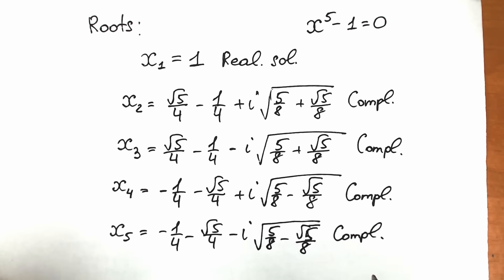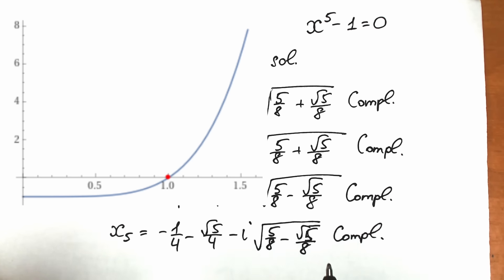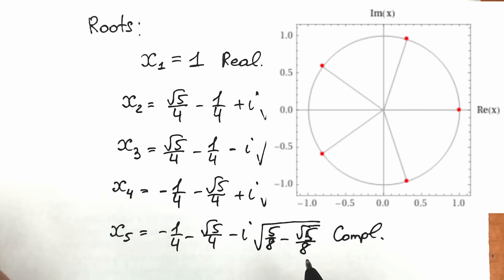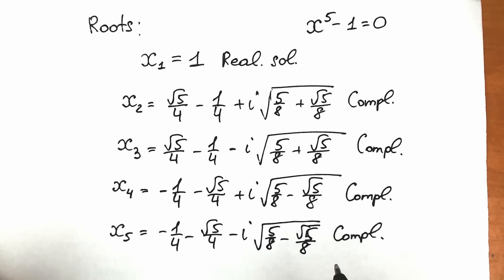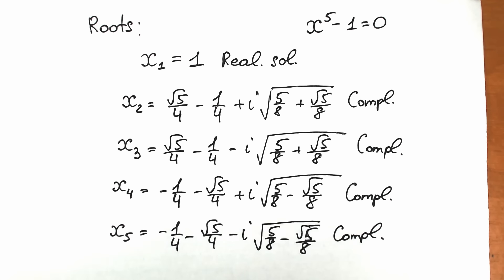We solved this challenge completely and found all five roots. On the real graph, the function intersects the x-axis only at x equals one, but in the complex plane we can see all four complex solutions as well. I hope you understood this explanation and learned something new. Write your questions in the comment section, leave a like, and thank you for your time and support — see you in the next video and have a great day!